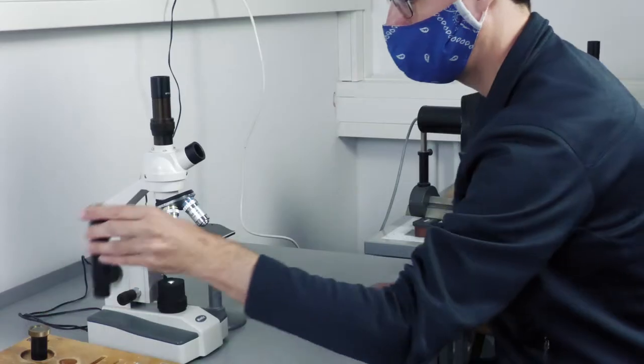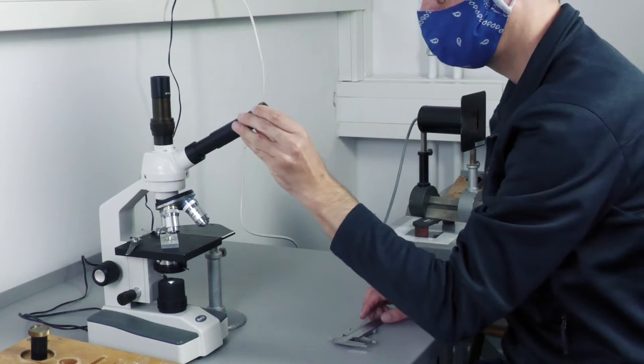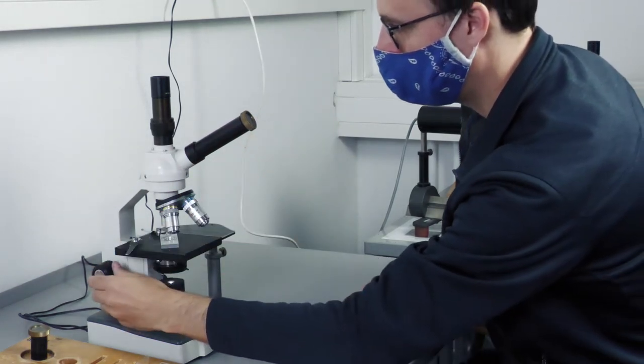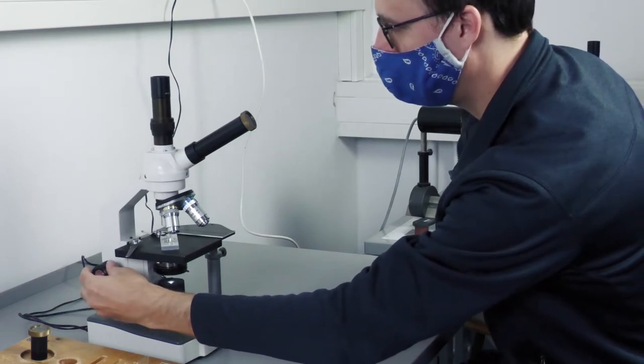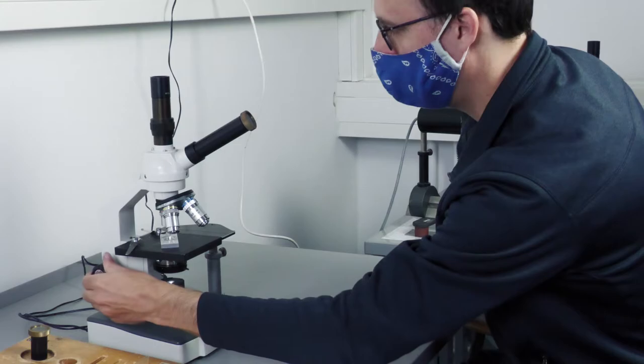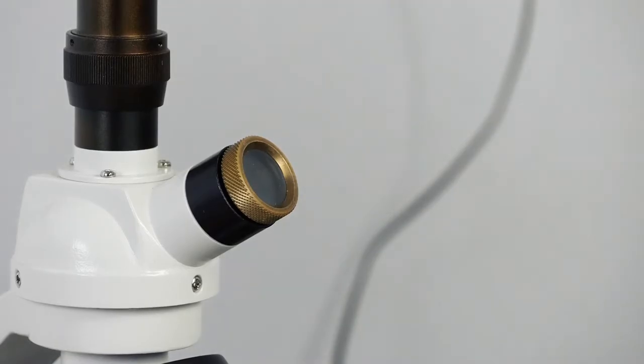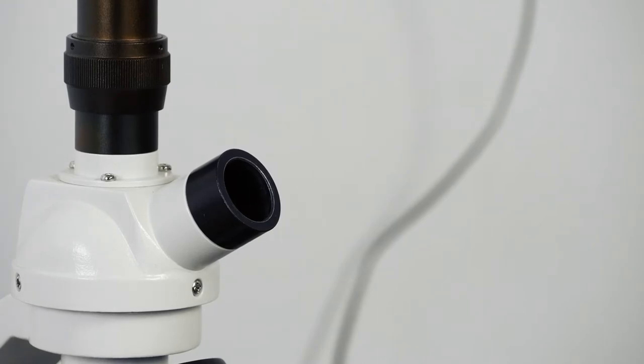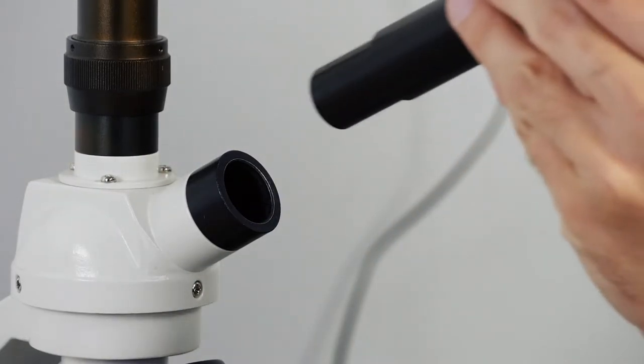Now measure the lens magnifications by measuring the intermediate images for two different tube lengths and the two lenses above. Namely, with the short tube which is fully inserted into the inclined eyepiece holder, and with the long tube which is also fully inserted in the inclined eyepiece holder.